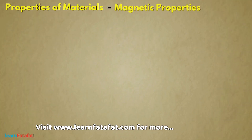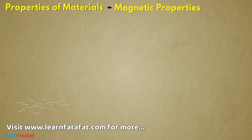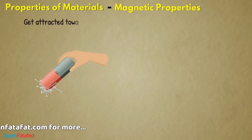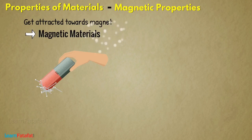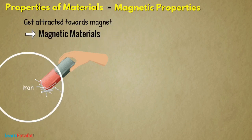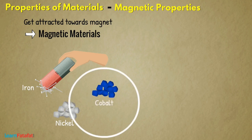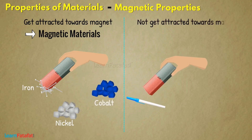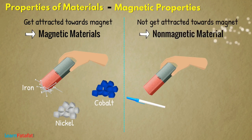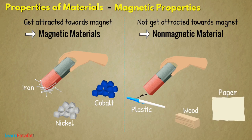Magnetic properties: Some materials get attracted towards a magnet. These are magnetic materials — for example, iron, nickel, and cobalt. Others which do not get attracted towards a magnet are non-magnetic materials — for example, plastic, wood, paper, glass, etc.